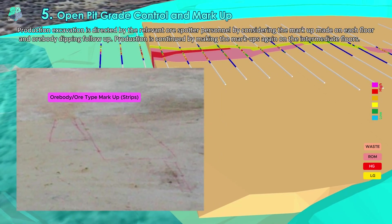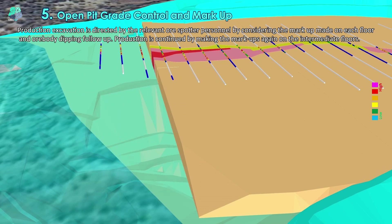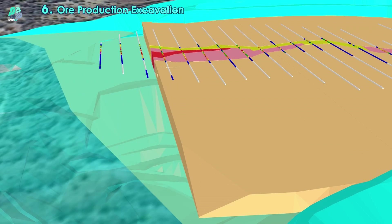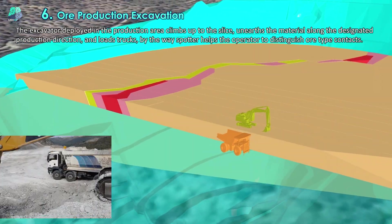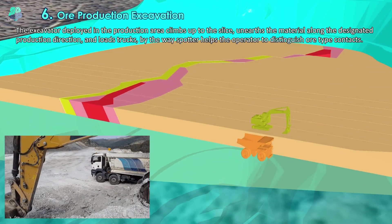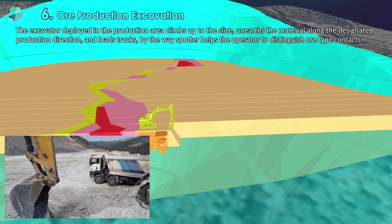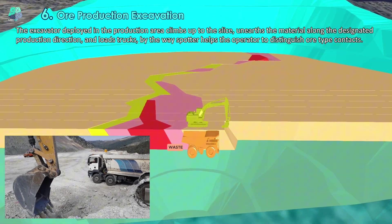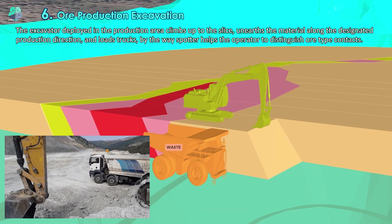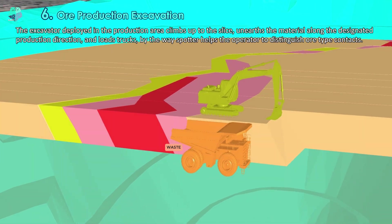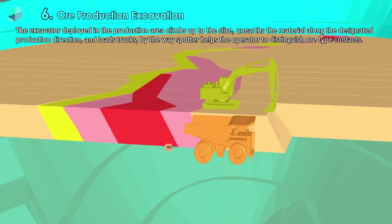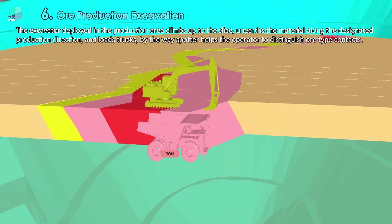Production excavation is directed by the spotter considering the markup made on each floor and ore body dipping follow-up. Production is continued by making the markups again on the intermediate floors. The excavator deployed in the production area climbs up to the slice, unearths the material along the designated production direction, and loads trucks.